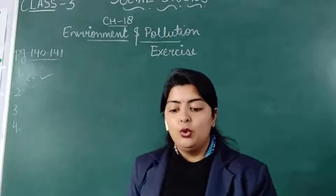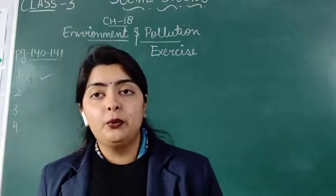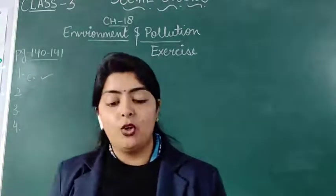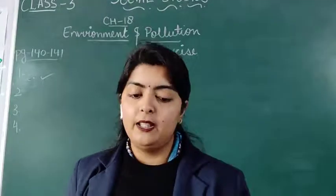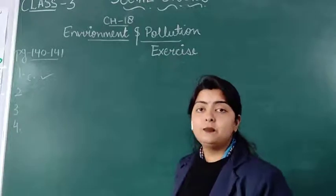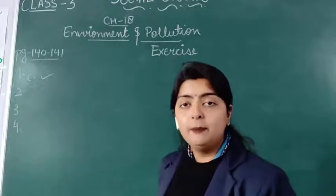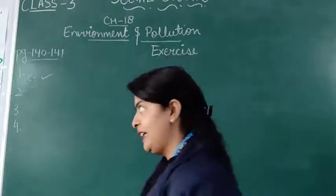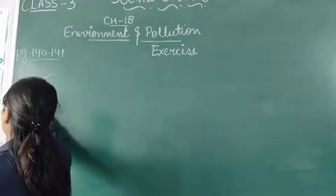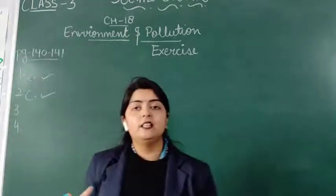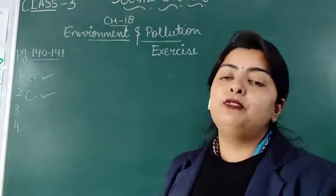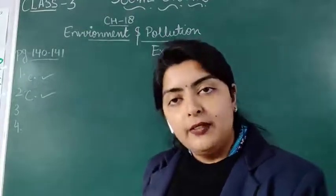Number 2: Water is polluted due to — options are A: Human activities, B: Industrial waste, C: Both A and B. The answer is also C, both A and B, because water is polluted because of human beings as well as industrial waste.